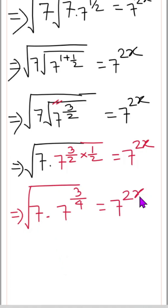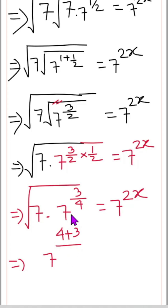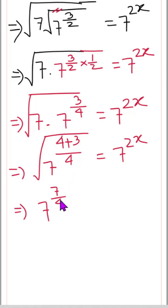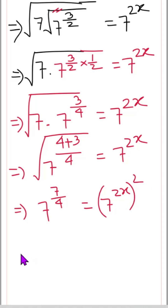Now taking the LCM, we get 4 plus 3 by 4, which equals 7 to the power 2x. So this simplifies to 7 to the power 7/4. Now we can square both sides, so 4 plus 3 is 7, giving us 7 to the power 7/4 equals 7 to the power 2x.